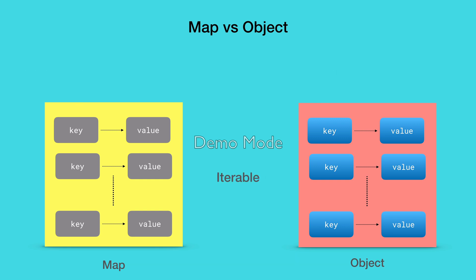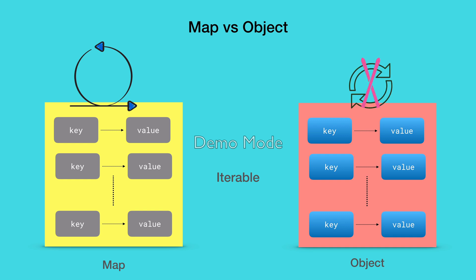Another difference is in the way we can iterate on them. Map is a built-in iterable in JavaScript, which means you can loop over every element in the map using a forEach loop. So if you know beforehand that you might end up iterating over key-value pairs, then consider using map. The object, on the other hand, is not iterable. To loop over every property in the object, we need to get hold of either entries, keys, or values, which are returned as arrays and then iterate over them.